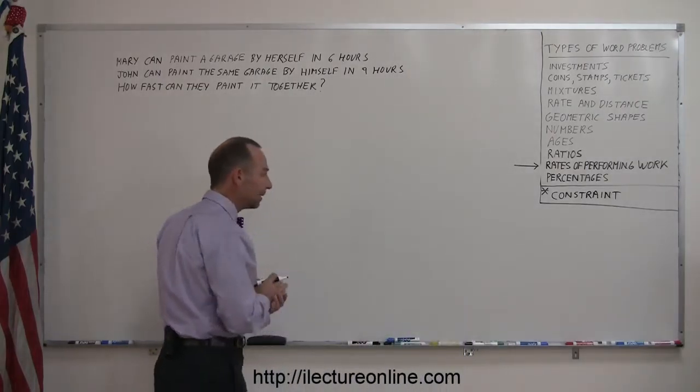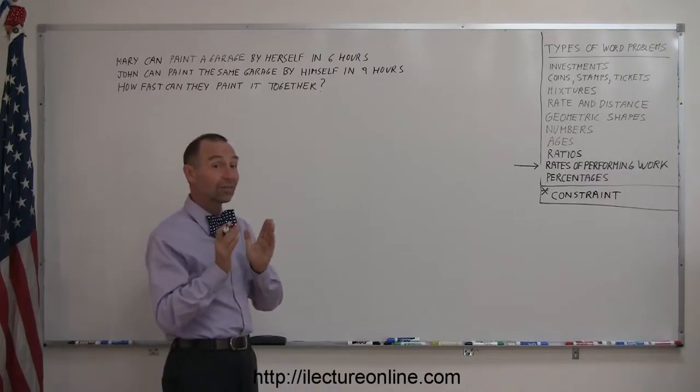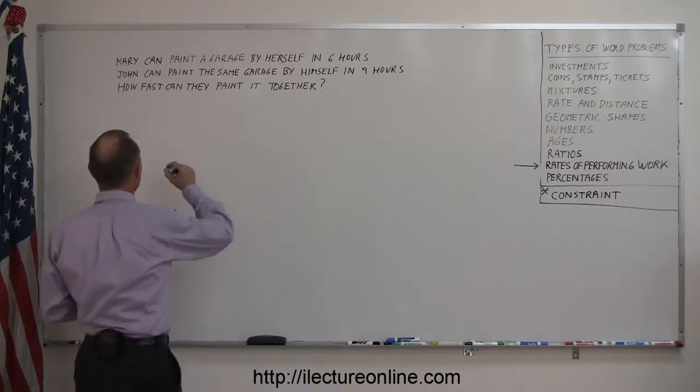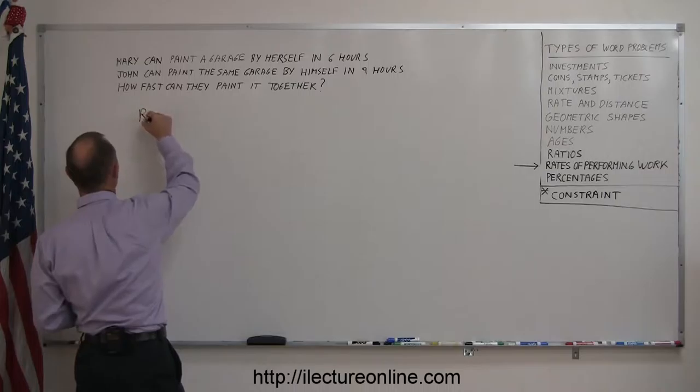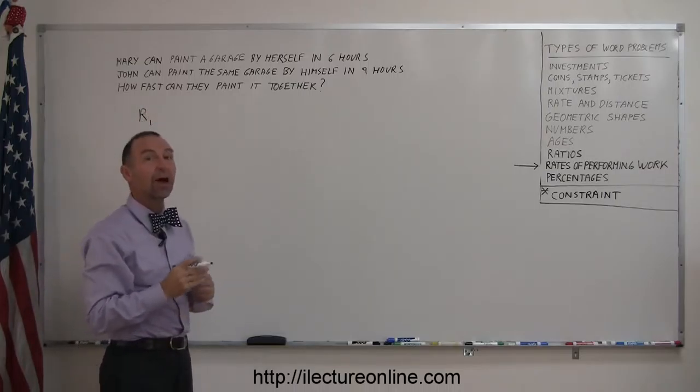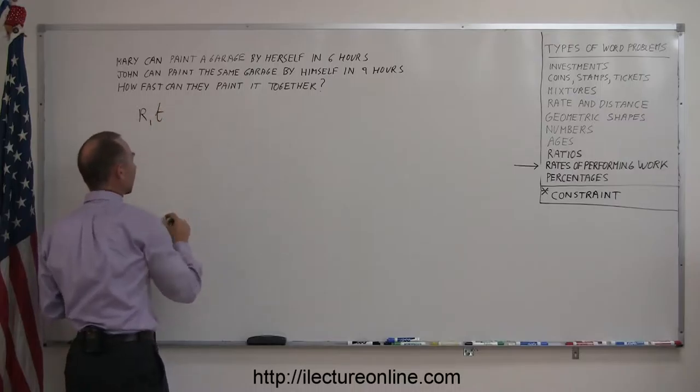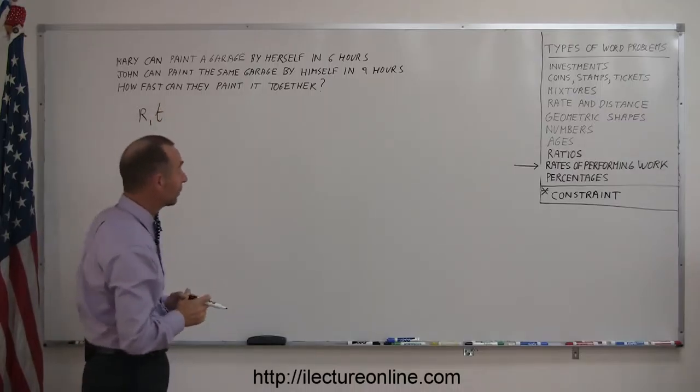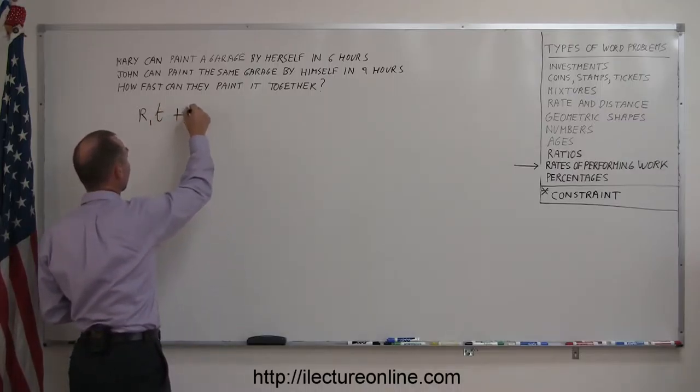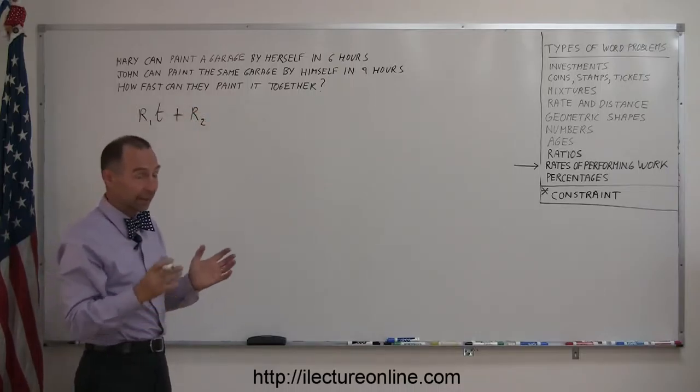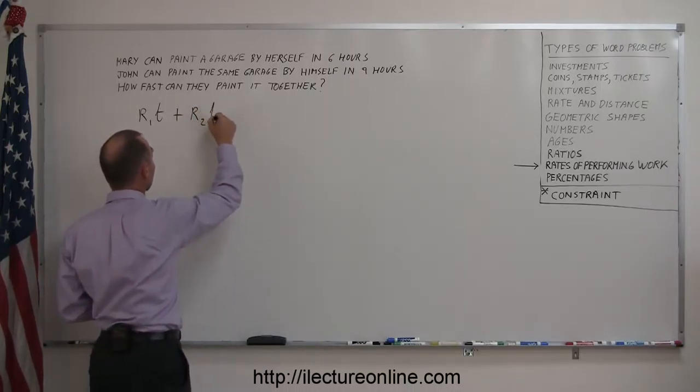It turns out that the best way to work on something like that is using this equation right here. If you take the rate of the first person times the time that they work at doing the job together, plus the rate of the second person times the time that they need to work on it together.